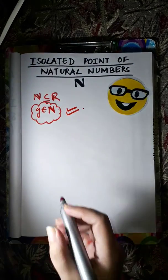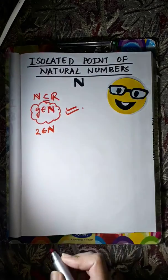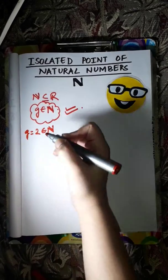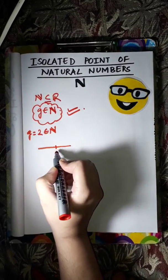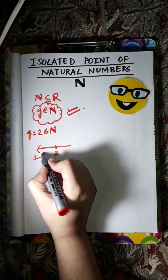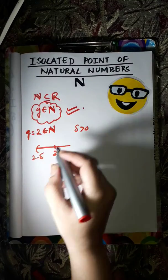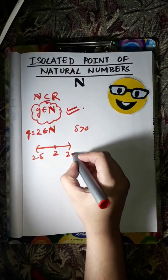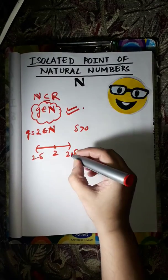Now we will take 2 that belongs to N, which equals G, and we will take a neighborhood of this. Let's say delta greater than 0. So the neighborhood is 2 minus delta and 2 plus delta.